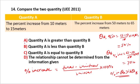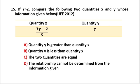Now let's see: if y is greater than 2, the value of A is determined. For example, let y equals 3. If y is greater than 3, and if y is greater than 6, then quantity A is sufficient.